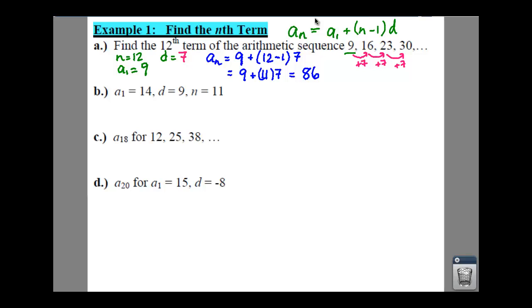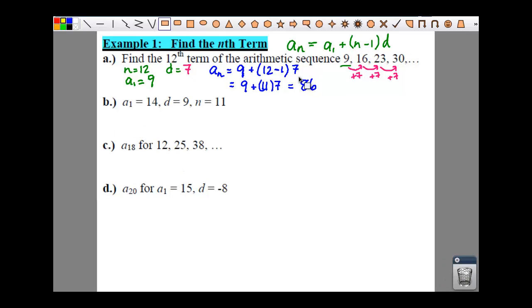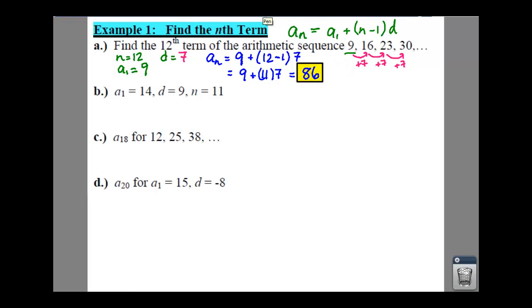So your twelfth number of this sequence is an 86. And that's one way you can use your formula here. Now b would be the same way, and you can tell it's just given to you a little bit differently in the information, but it gives you your a sub 1, which is here, your d, and your n. So pause the video for a moment and see if you can actually get the answer that I get.